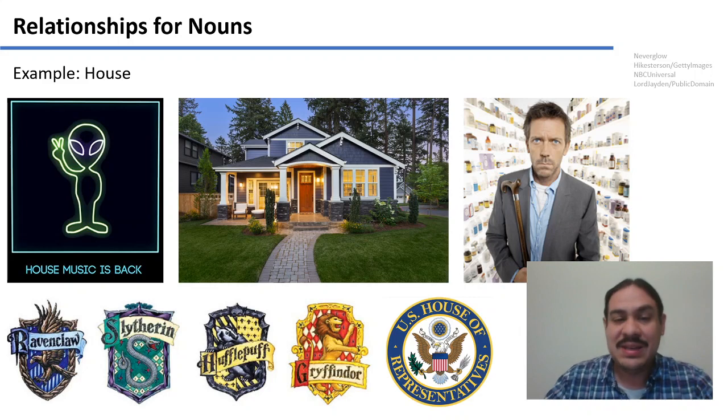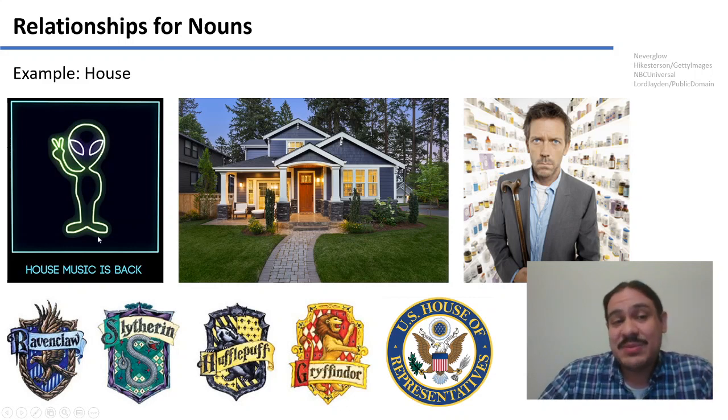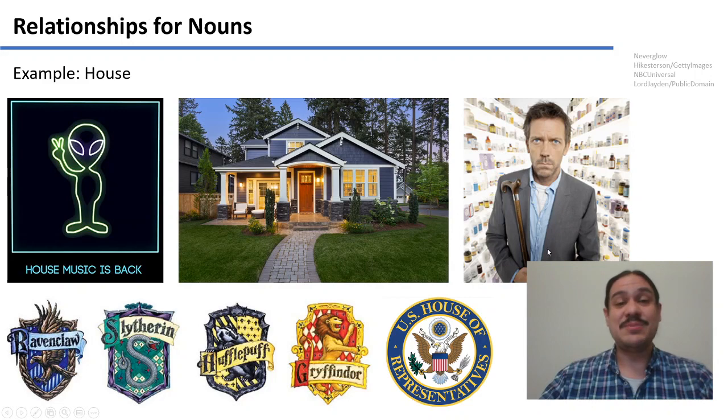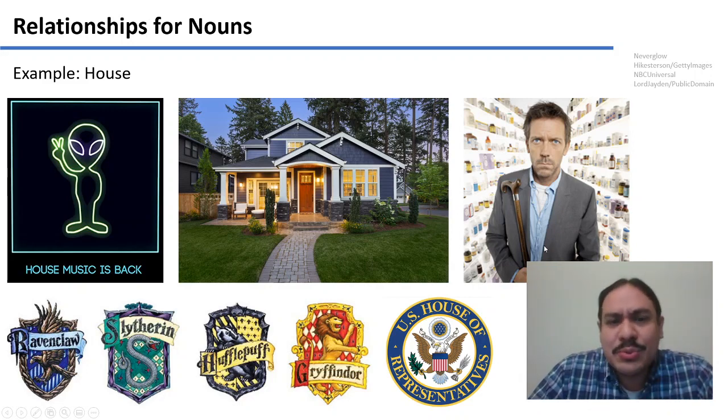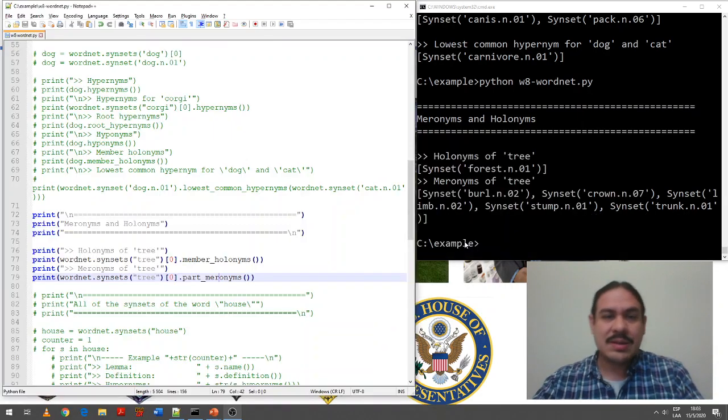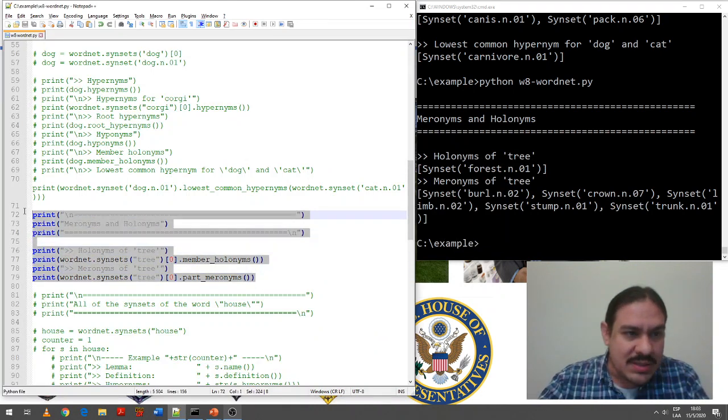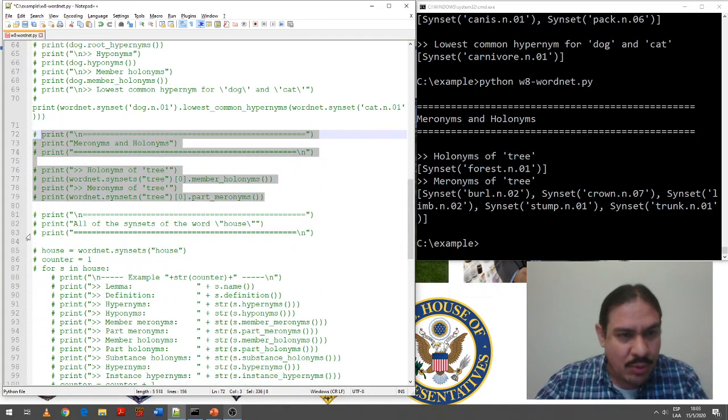But there's many other meanings for the word. A house can be a group of individuals according to a certain goal, for example. It can be a group of individuals in a legislature. It can be a type of music that is performed in a kind of environment. It can be the name of a person. For example, this is what happened when I typed house on Google.